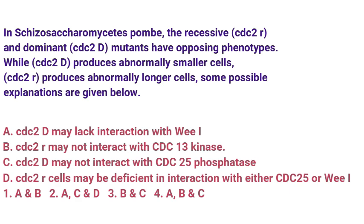Take the textbook Karp's copy, go to Chapter 14, page number 565. Read it. If you don't know which chapter it is, search by keyword — here it is CDC. Read it and understand. V1 controls transition from G2 to M. If V1 gets mutated, cells divide prematurely — the result? Smaller cells. Here CDC 2D produces smaller cells, so option A is correct: CDC 2D may lack interaction with V1. That's why smaller cells.